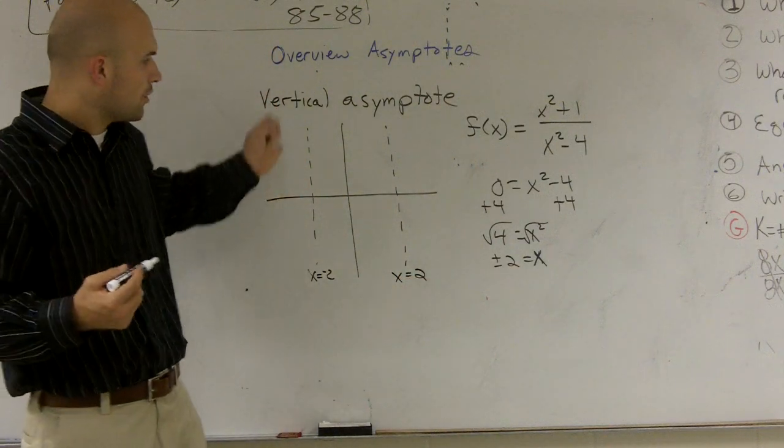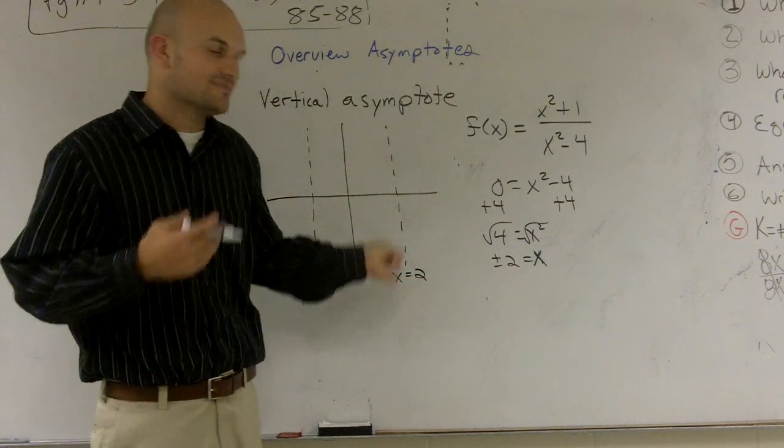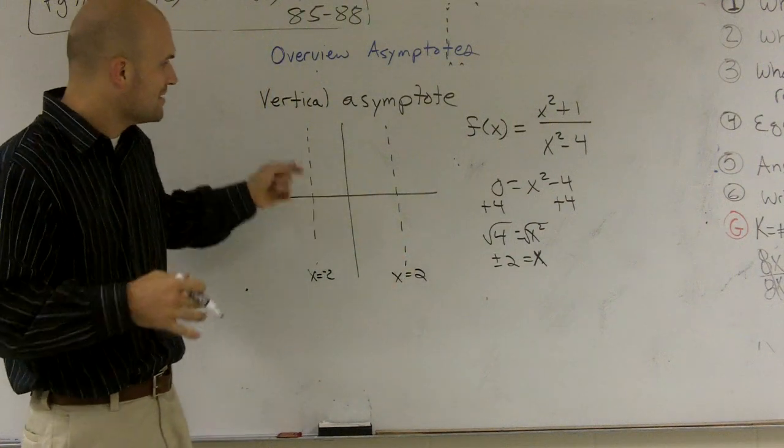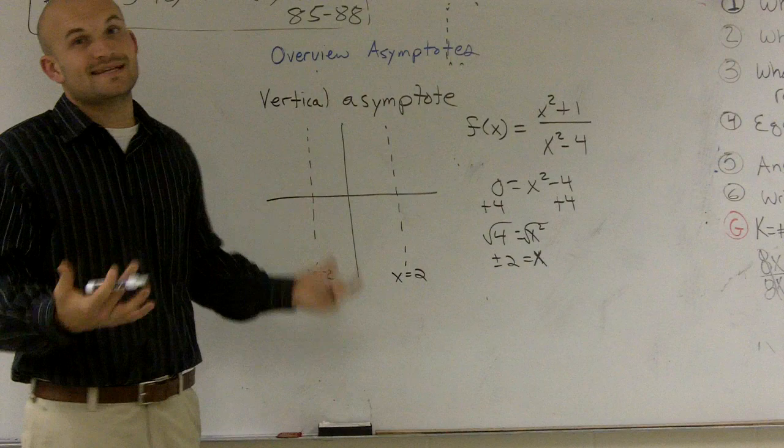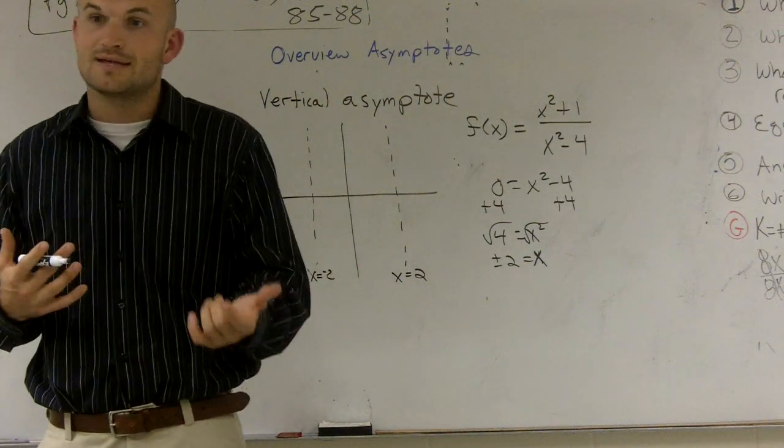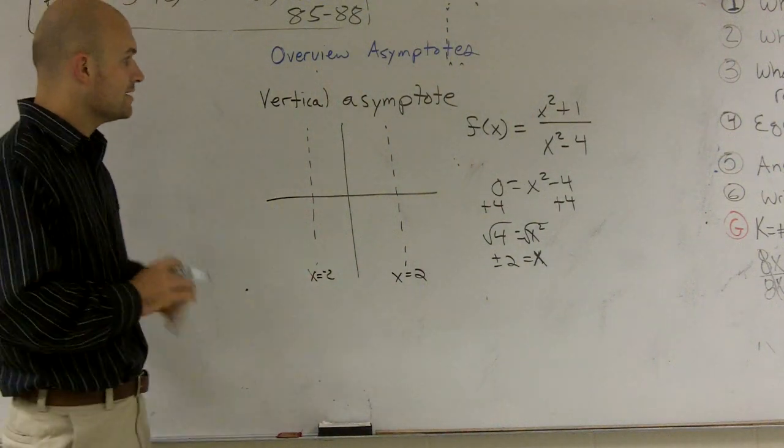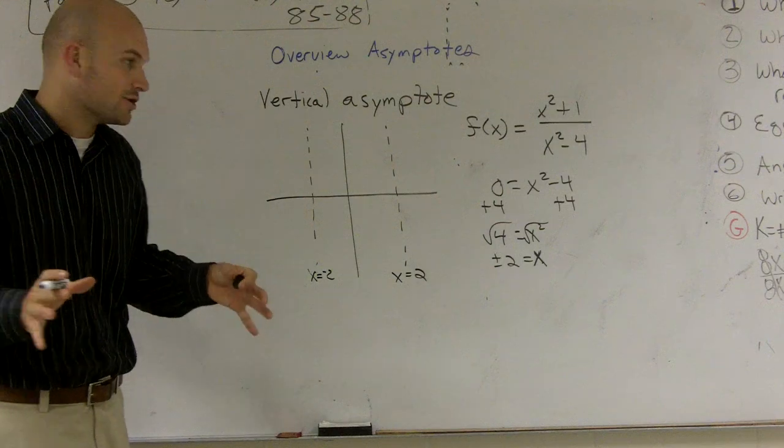So those are my two vertical asymptotes. My graph is going to approach these two lines, but it's never going to cross actually those two lines. So that's how you find your vertical asymptotes.